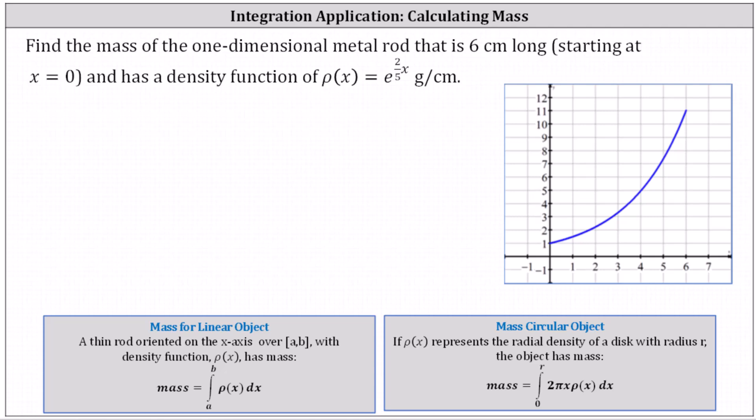Find the mass of the one-dimensional metal rod that is six centimeters long starting at x equals zero and has a density function given by rho of x which I've graphed here on the right. Analyzing the density function, notice from x equals zero to x equals six, the density increases exponentially.